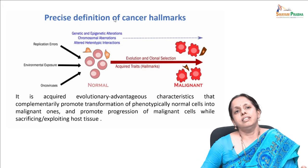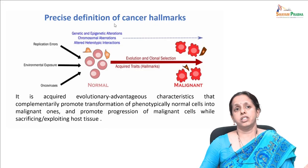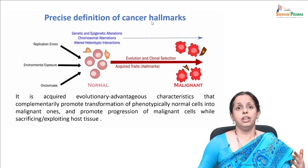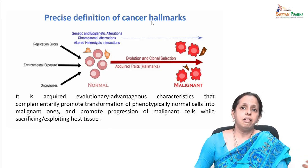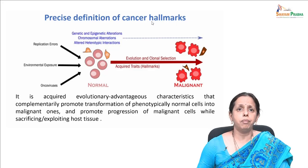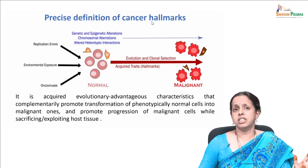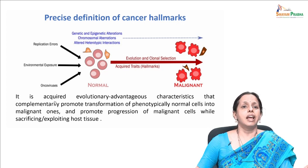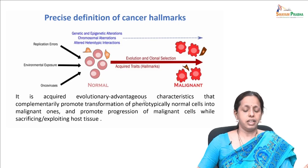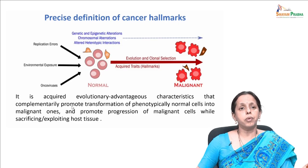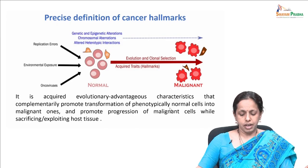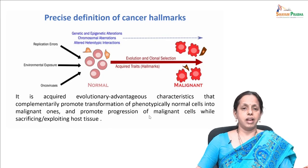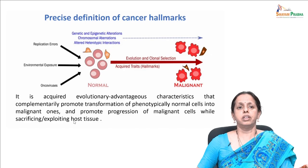What exactly is a cancer hallmark? Not every event a cancer cell plays is called a hallmark. There are only certain defined six to eight hallmarks. A hallmark is defined as an acquired, evolutionarily advantageous characteristic that completely promotes transformation of phenotypically normal cells into malignant ones and promotes progression of malignant cells while sacrificing or exploiting the host cell.